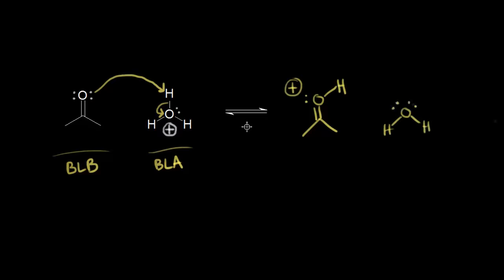Let's follow our electrons again. The electrons in magenta right here on the oxygen picked up this proton, forming this bond — so this bond right here represents the two electrons in magenta. Then the electrons in blue move off onto the oxygen to add another lone pair of electrons onto that oxygen, giving us water.